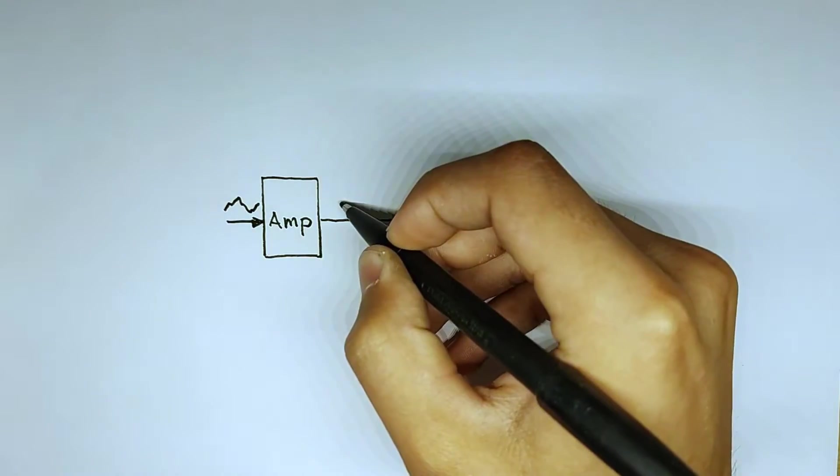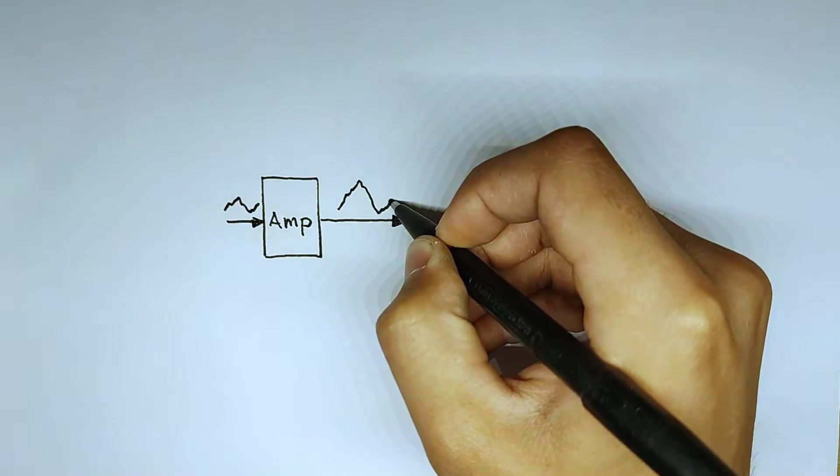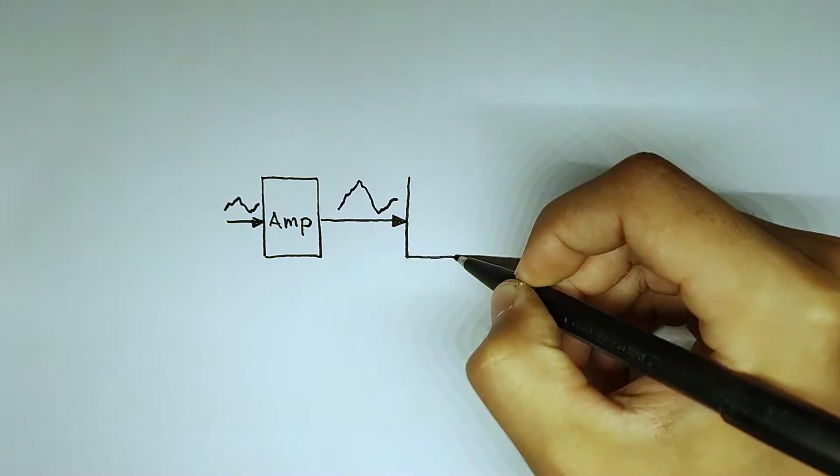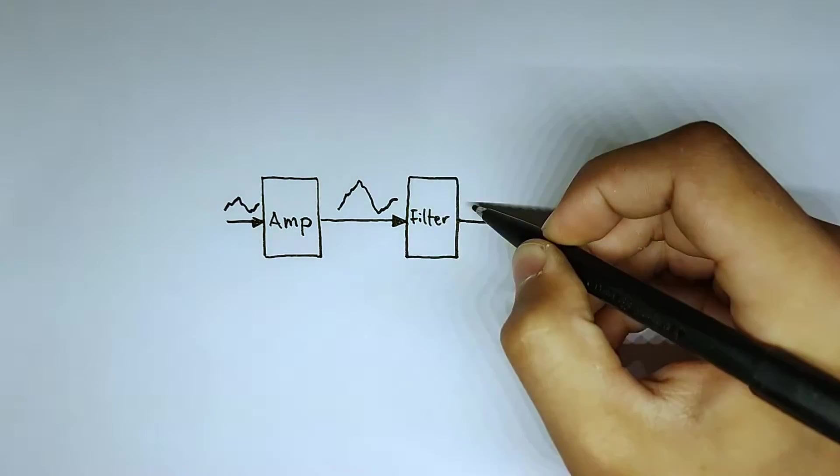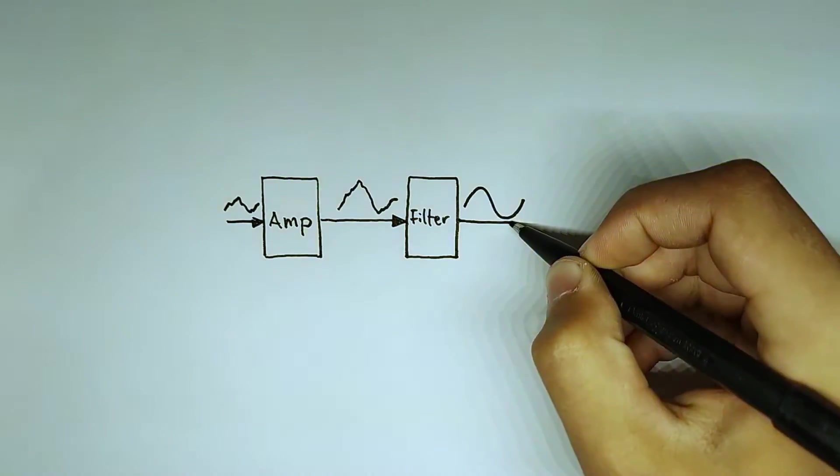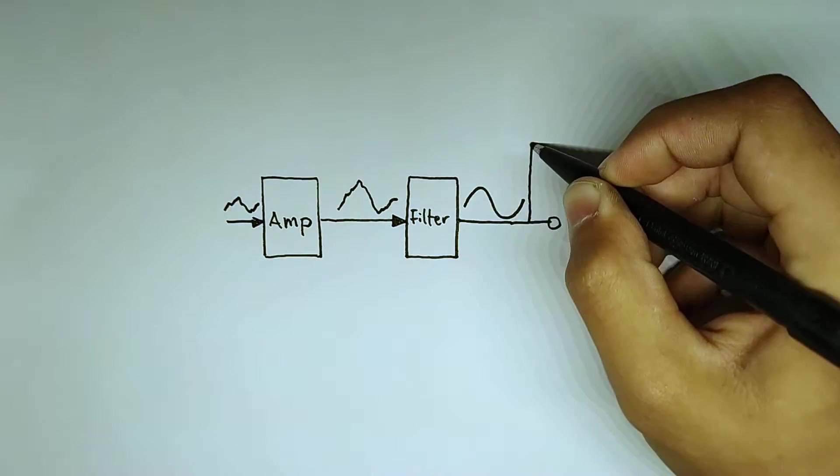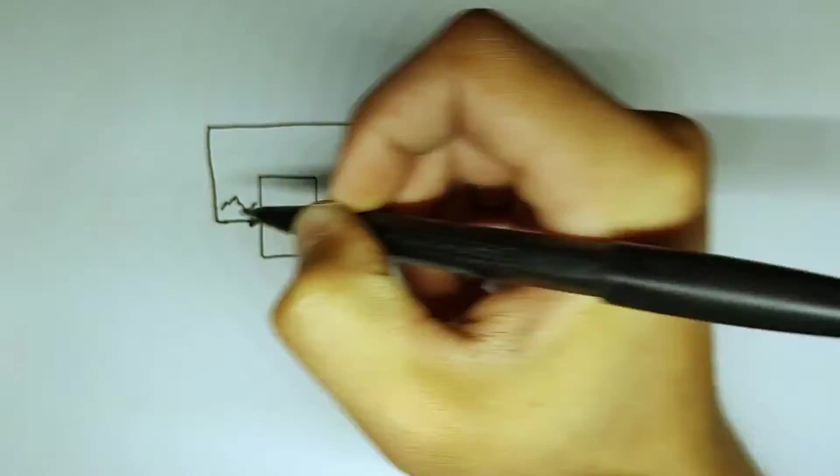The amplifier naturally amplifies the frequency it receives and it's important that it doesn't phase shift it. The filter obviously filters the frequencies and just passes the single one that we want and also needs to not phase shift it.